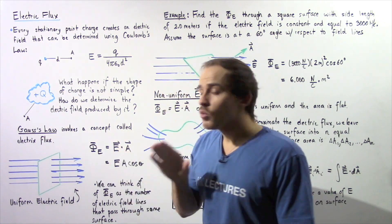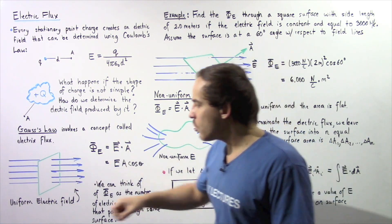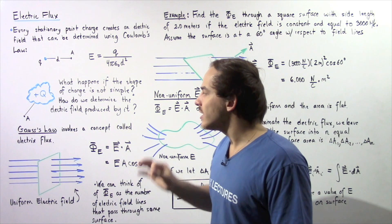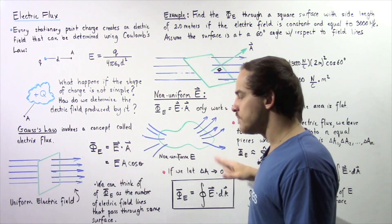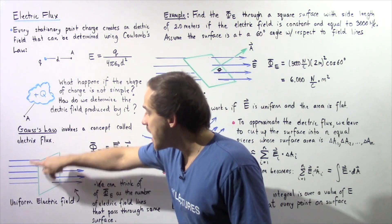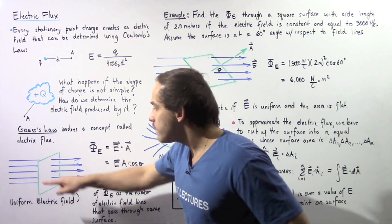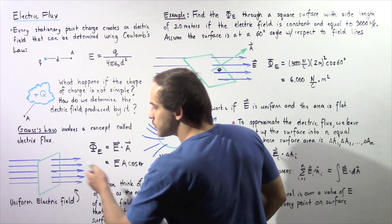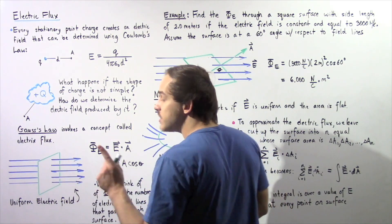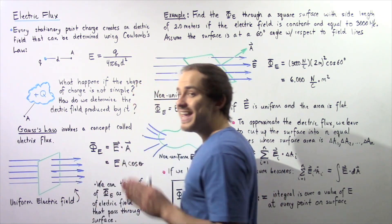Before we define Gauss's law, we have to discuss a concept known as electric flux. Let's look at the following diagram. Suppose we have a uniform electric field given by the following blue arrows, so our electric field lines are parallel with respect to our x-axis. Now let's suppose we take a very thin, flat sheet of area given by the following green region. In this case, the vector of this area points in the same direction as our electric field lines, which implies the angle between this face vector and our electric field lines is zero.